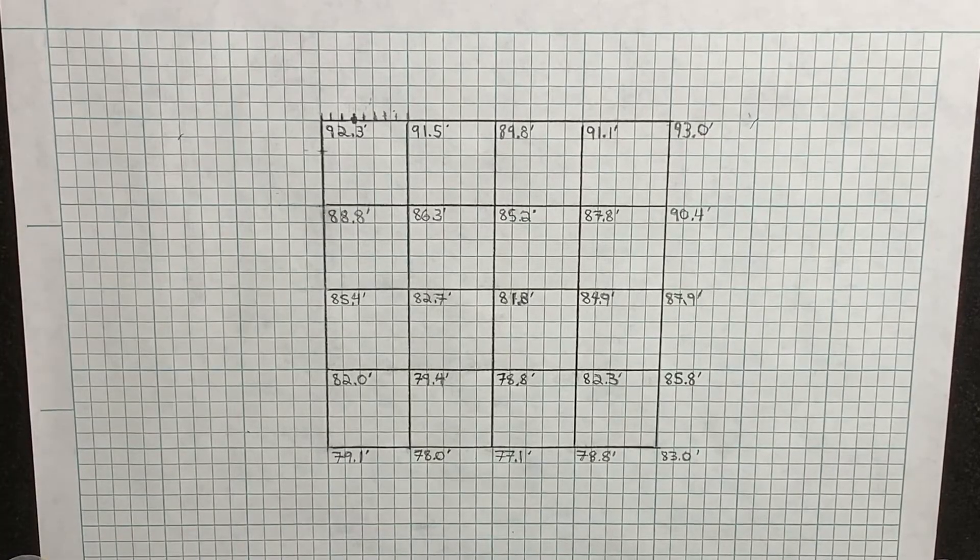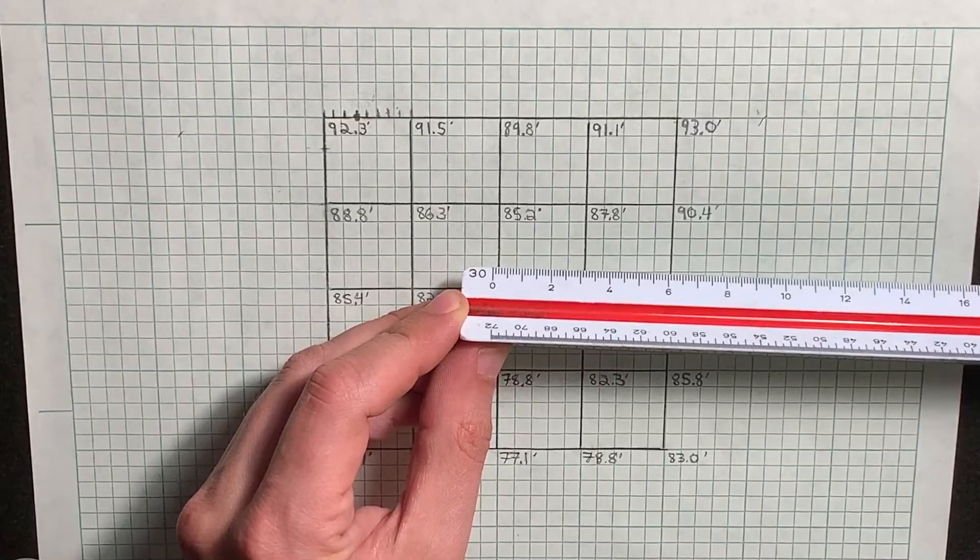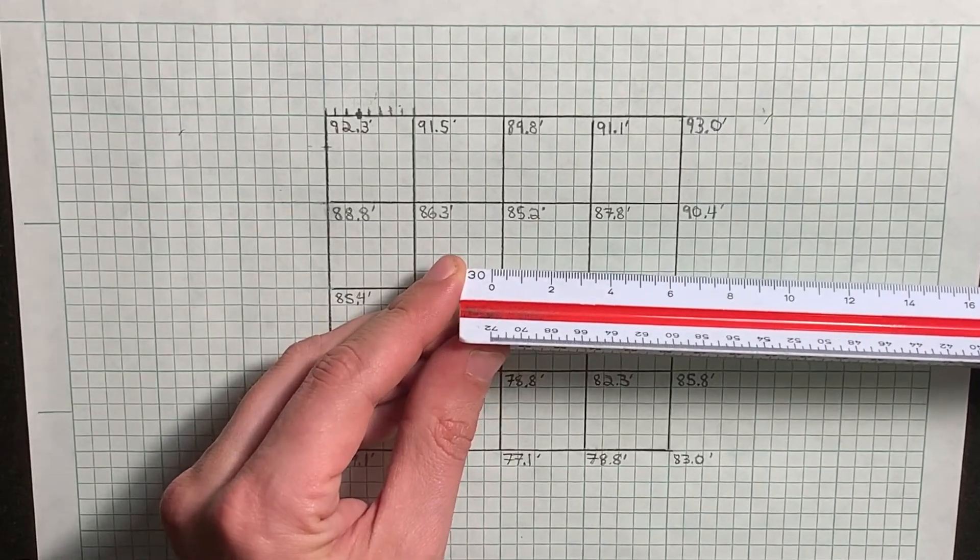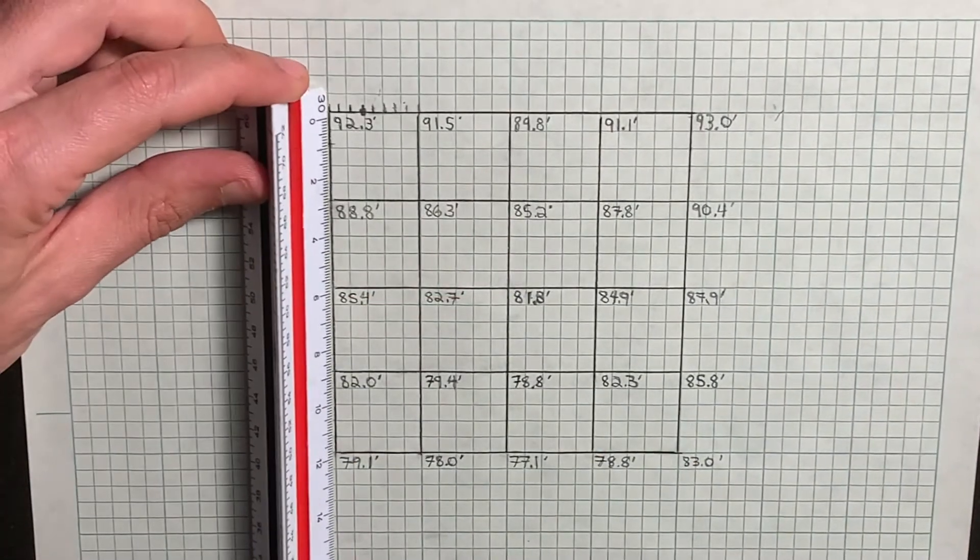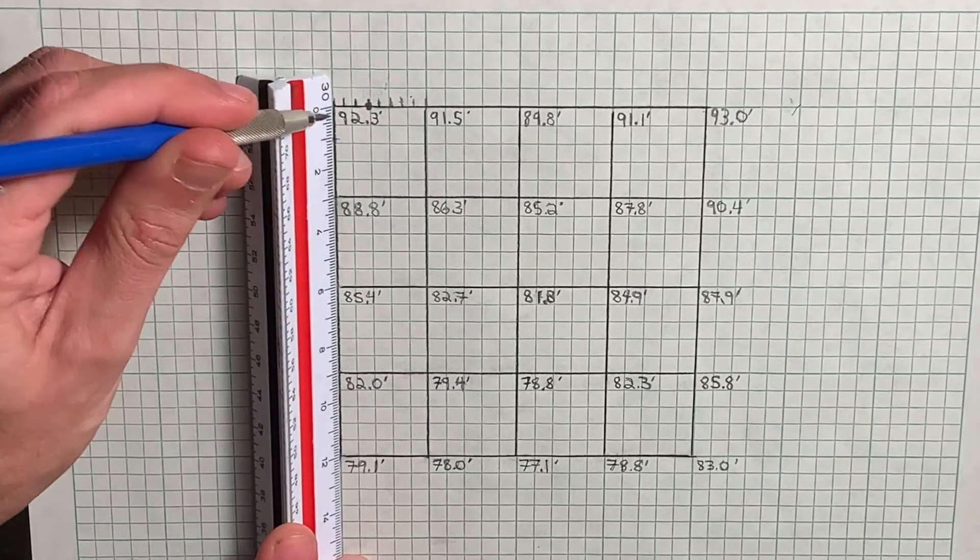This time, since we know we'll need 35 units, we'll use the 30 to 1 side of our engineer scale. Now, as you can see, since the scale is standardized to measure 30 units over 1 inch of space, we're 5 units short.